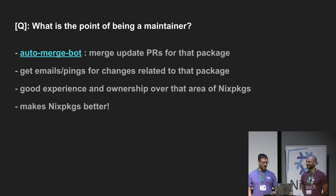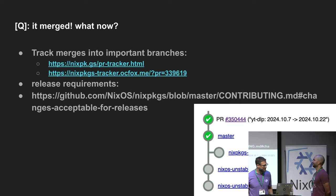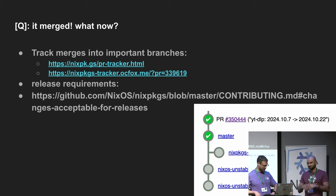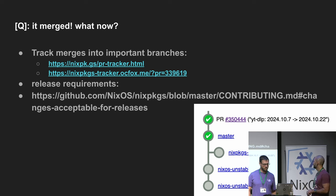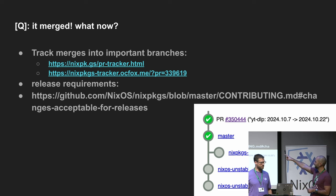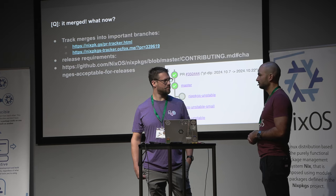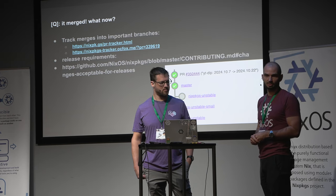Let's say I merged this thing — what now? If you merge to main or master, your package is generally available on the latest commit of NixPackages. But that doesn't necessarily mean it's on one of the other branches already cached by the NixOS cache. There are PR tracker tools linked here. A PR tracker works like this: you throw in your PR number and it tells you in which branch your change is already available, from which you know if it's already cached or not.